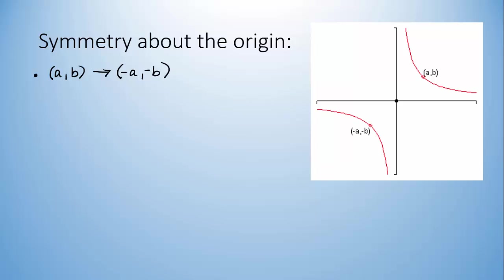So if I tell you that this is the graph of y equals 1 over x, let's say when x is 2, y is 1 half. Well, if that's true, then (-2, -1/2) must also be on the graph.